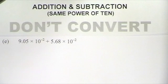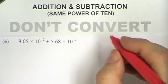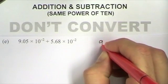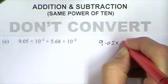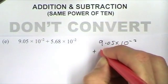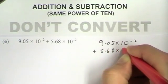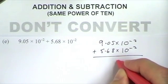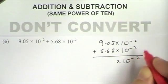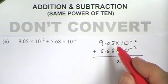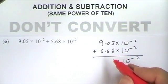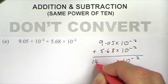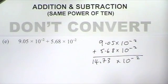This next example has negative powers of 10 — both numbers expressed as 10 to the minus 2. They're the same power of 10, so I can add them as requested. 9.05 times 10 to the minus 2 plus 5.68 times 10 to the minus 2. Both are 10 to the minus 2, so the answer is going to be times 10 to the minus 2. Adding 9.05 plus 5.68 gives me 14.73 times 10 to the minus 2.